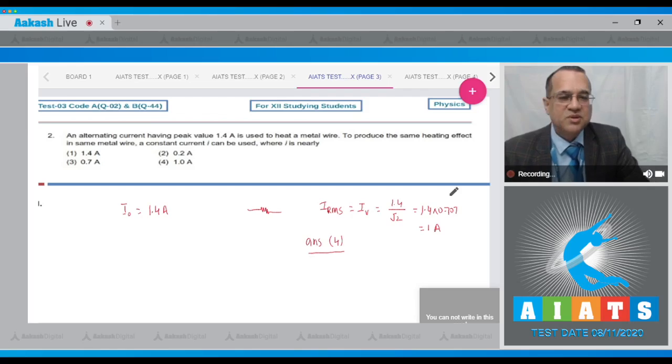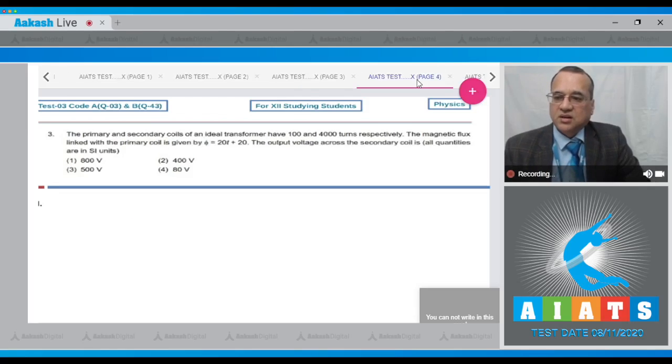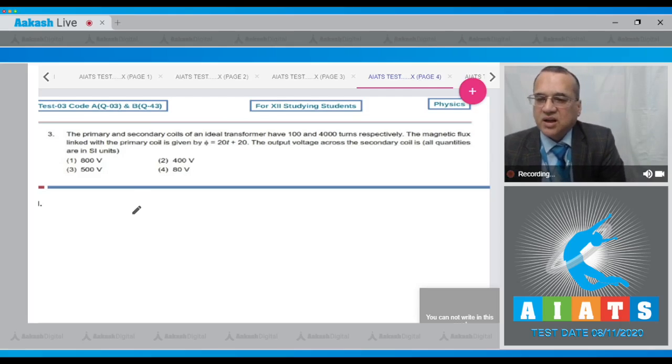Let us move to the third question. Question number 3 says that primary and secondary coil of an ideal transformer has 100 and 4,000 turns respectively. The magnetic flux linked with the primary coil is given by phi equal to 20T plus 20. The output voltage across the secondary coil, all quantities are in SI units, and these are the four options.